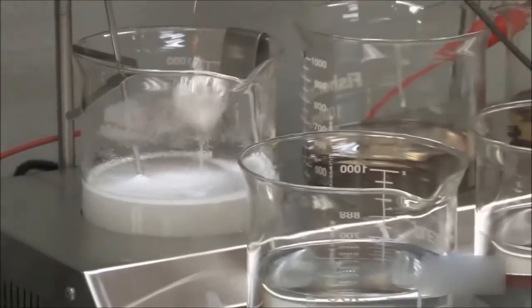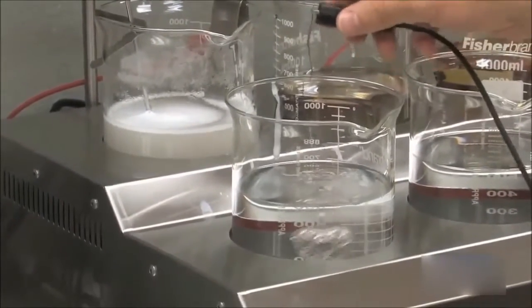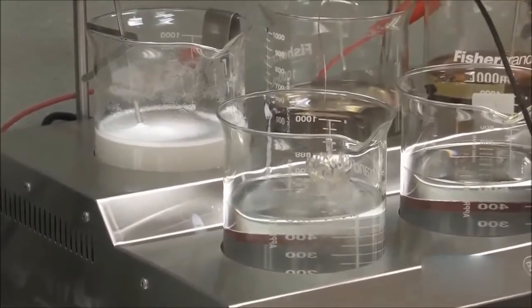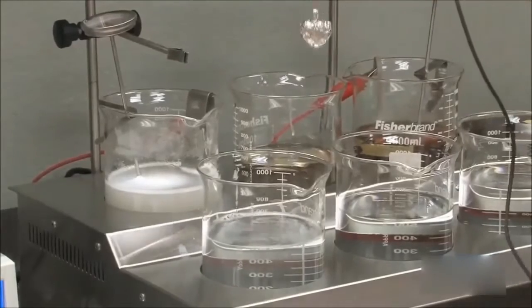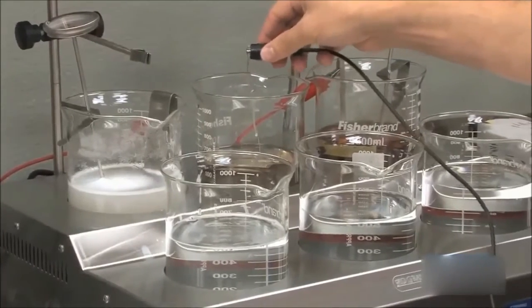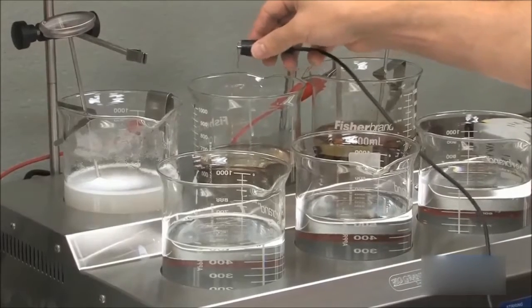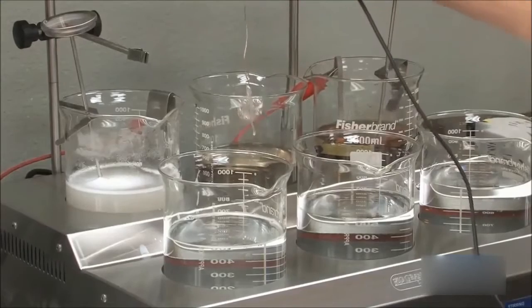Rinse the piece thoroughly in distilled water only. Tap water contains minerals that will contaminate the plating process. Finish the activation process by immersing the piece in a room temperature acid bath for one to two minutes. The acid removes any lingering traces of electro cleaner solution and completes activation. This surface activation will promote outstanding adhesion of rhodium during the plating bath.